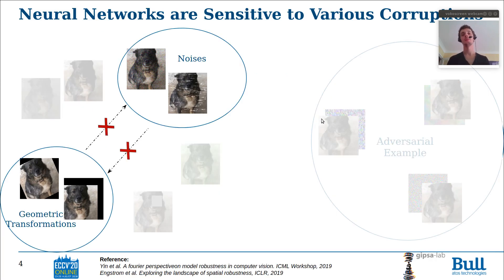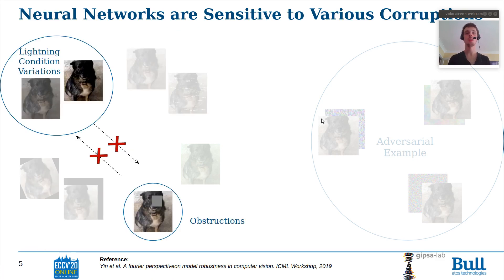It has been shown also that the robustnesses towards the corruptions that affect the texture of images are not correlated with the robustness to the corruptions that affect the shape and geometric transformation of images. And in general, the robustnesses of common corruptions are not correlated. So addressing the robustness towards one kind of common corruptions doesn't imply addressing the robustness to the other one.